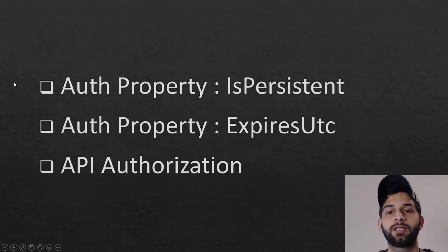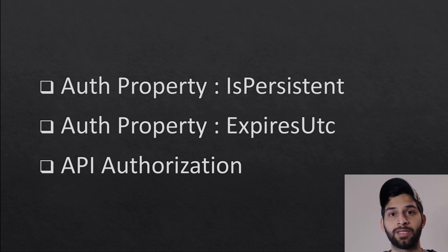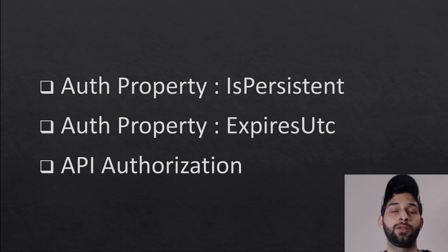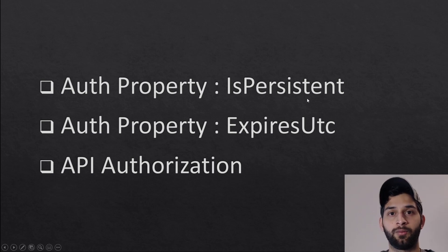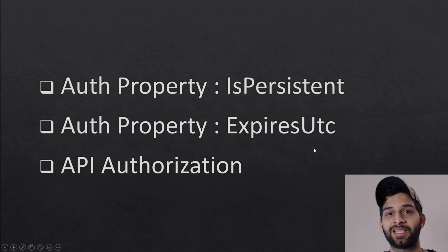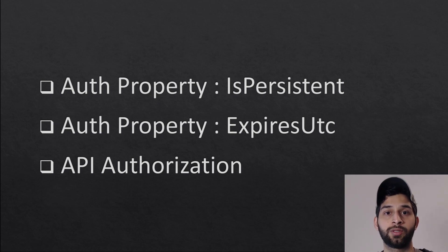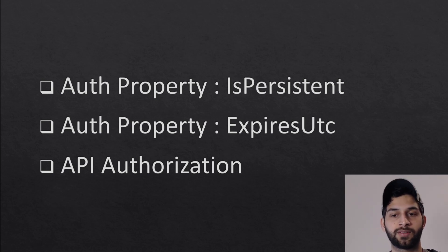We can set some of the cookie's properties. We can set the IsPersistent property, which means even after closing the browser the user stays logged in — the cookie stays in the browser so the user doesn't need to re-login when they reopen it. We can set this property to true. We can also set the ExpiresUtc property, which sets the expiry date for our cookie. I'm going to set it to five seconds and see if the cookie gets expired after five seconds.